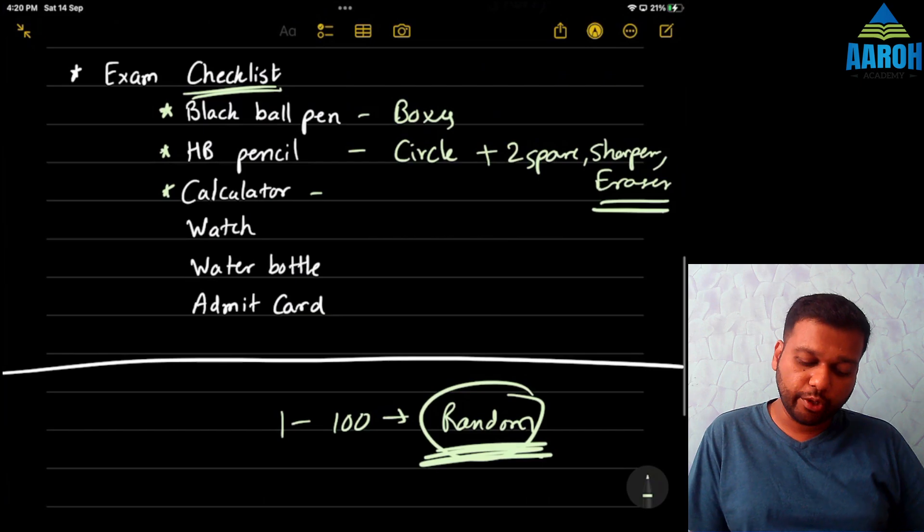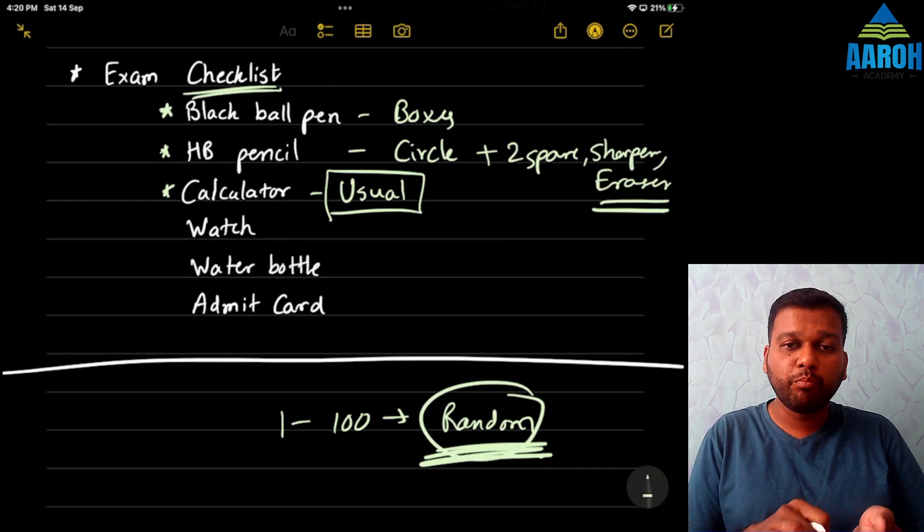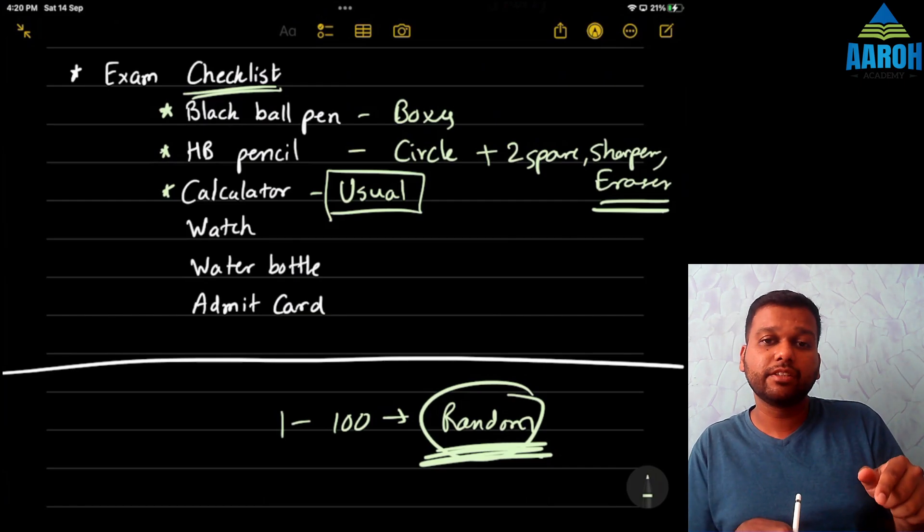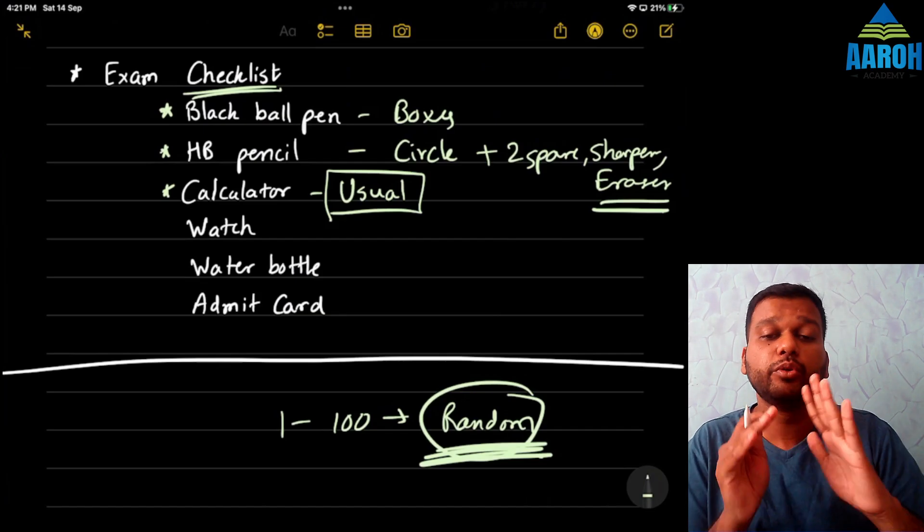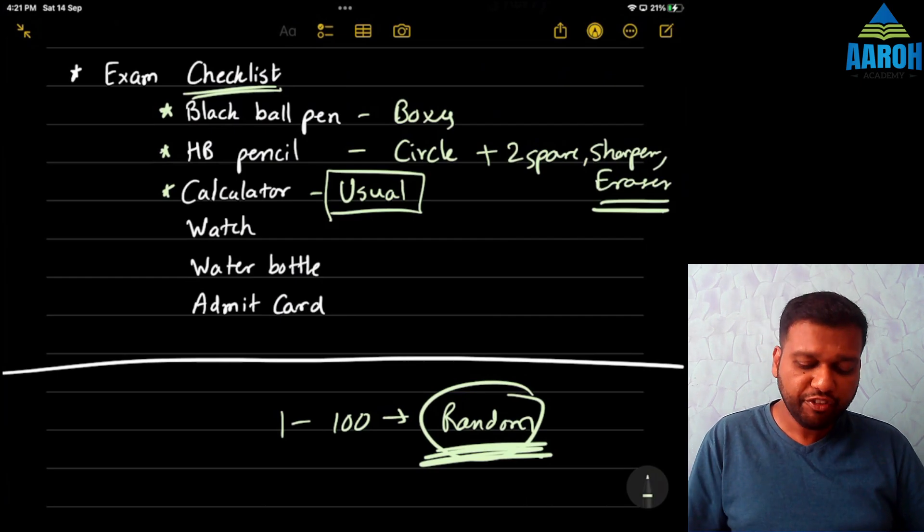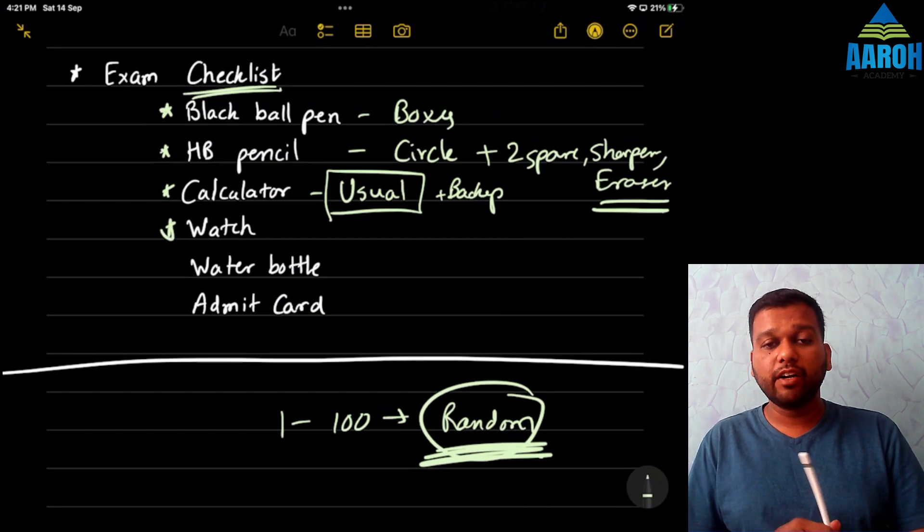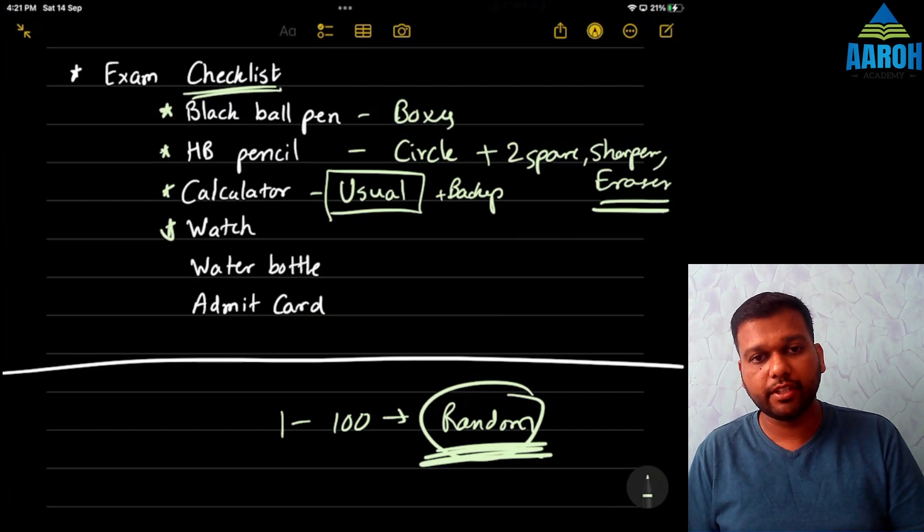Calculator. Calculator must be your usual calculator. Do not take a new calculator with you because that will have M plus MRC button or plus minus sign at some different place or square root. And that might confuse you. That might slow you down. So use your usual calculator. If possible, take a backup calculator with you. If possible. If possible, carry a watch with you so that you don't get panicked. You know when 1 hour is done, when 1 and 1 half hour is up and so on.